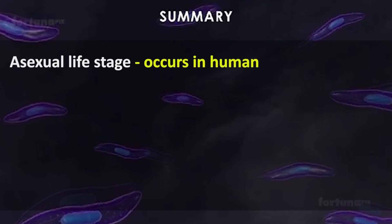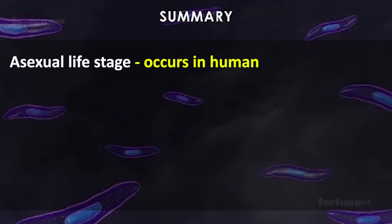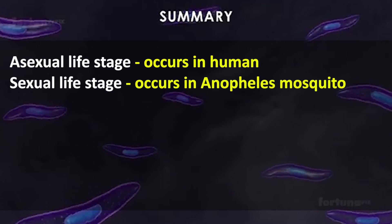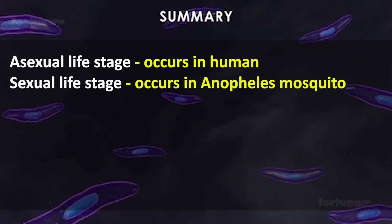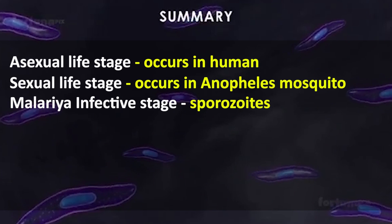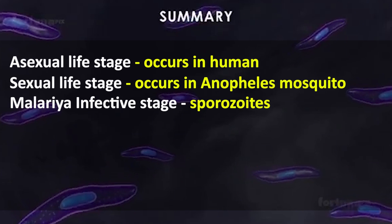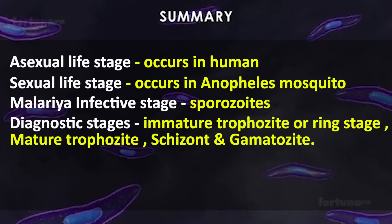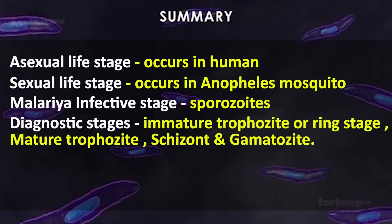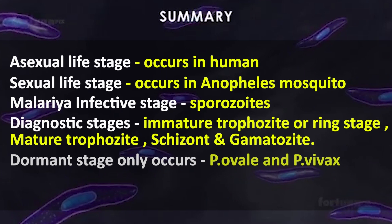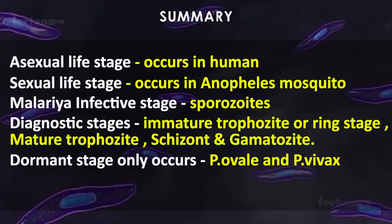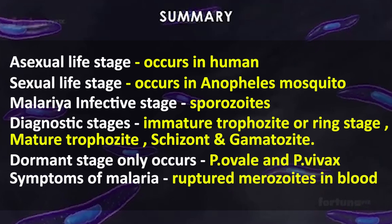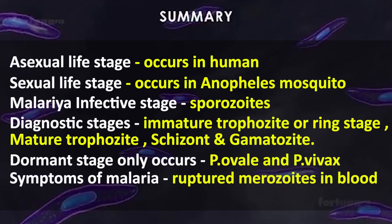As a summary: the asexual life stage occurs in human; the sexual life stage occurs in anopilous mosquito. The malaria infective stage is spirocytes. Diagnostic stages are immature tropocyte, mature tropocyte, psychogony, and gametocyte. Hypnocytes or dormant stage only occurs in plasmodium vivax and plasmodium ovale. Symptoms of malaria are caused by ruptured myocytes in blood.